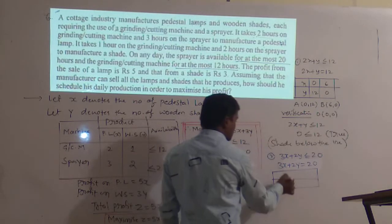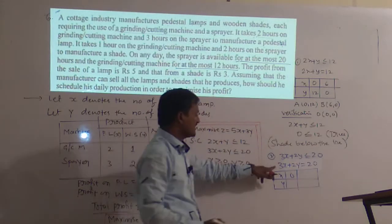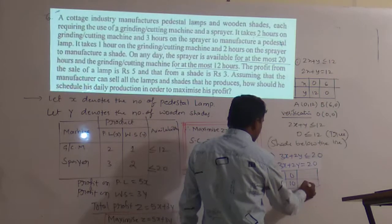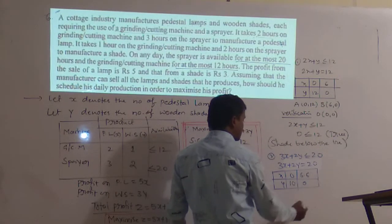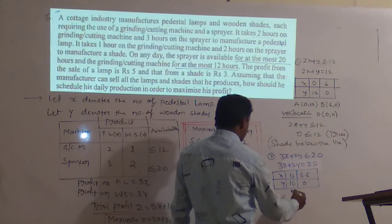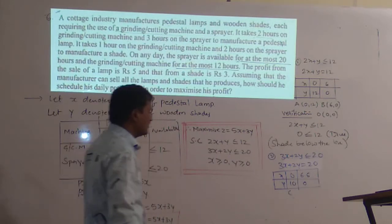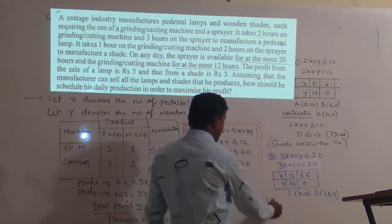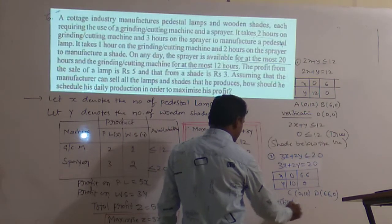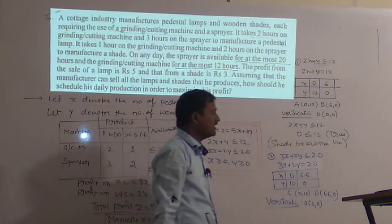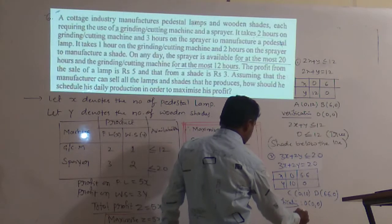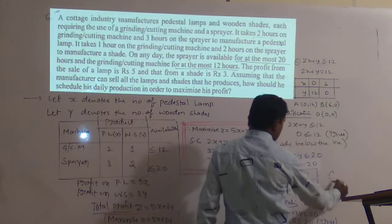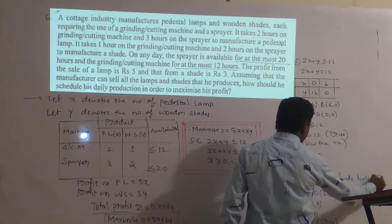For verification, substitute the coordinate of the origin in 3x + 2y ≤ 20: 0 ≤ 20, which is true. Since it is true, we shade below the line.